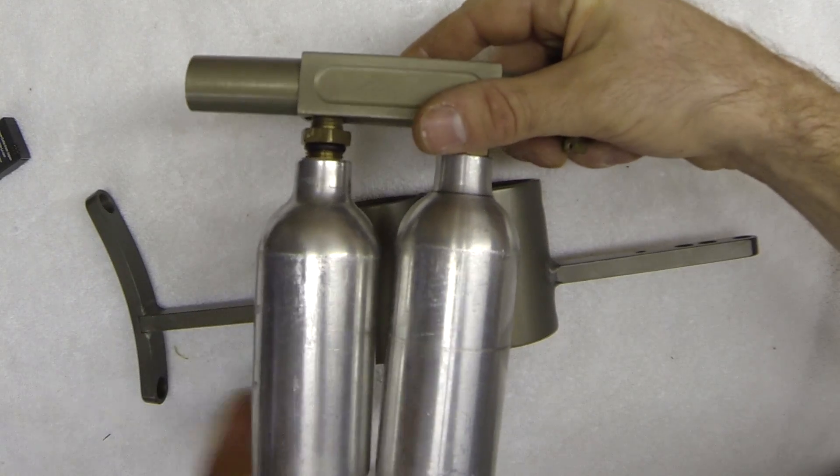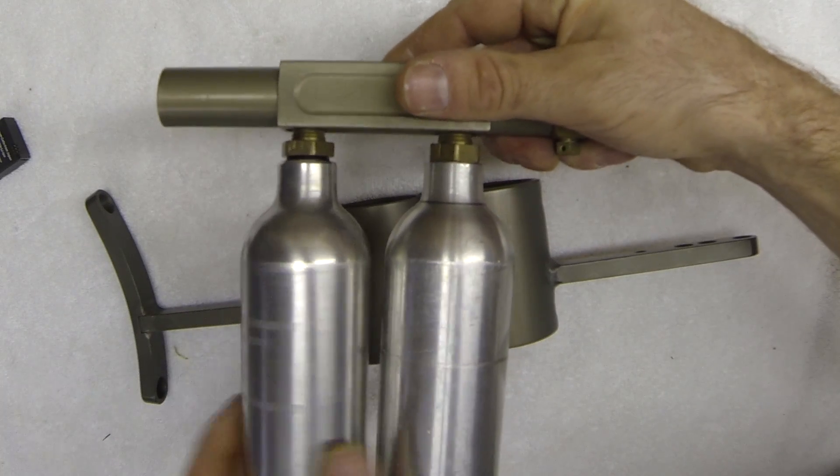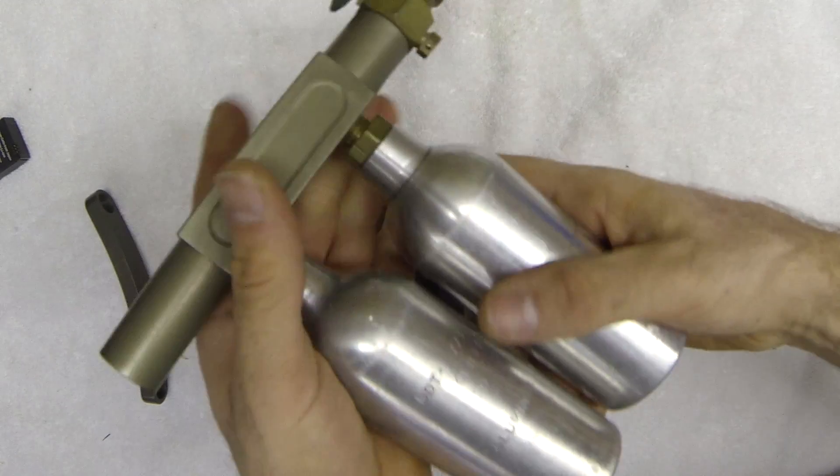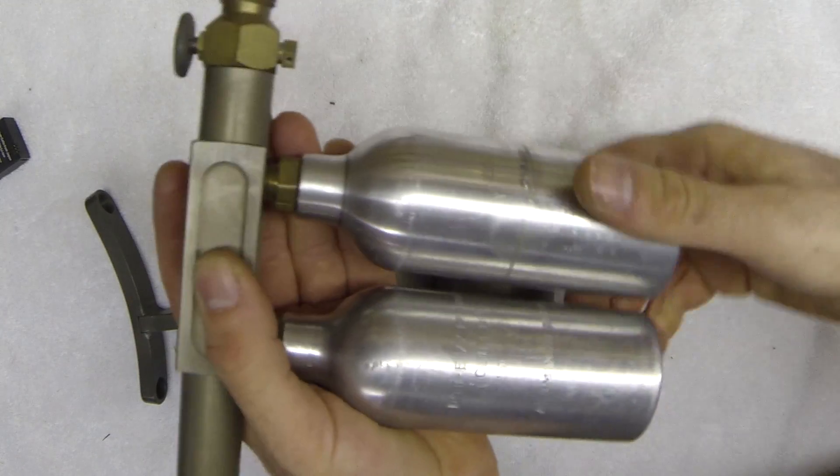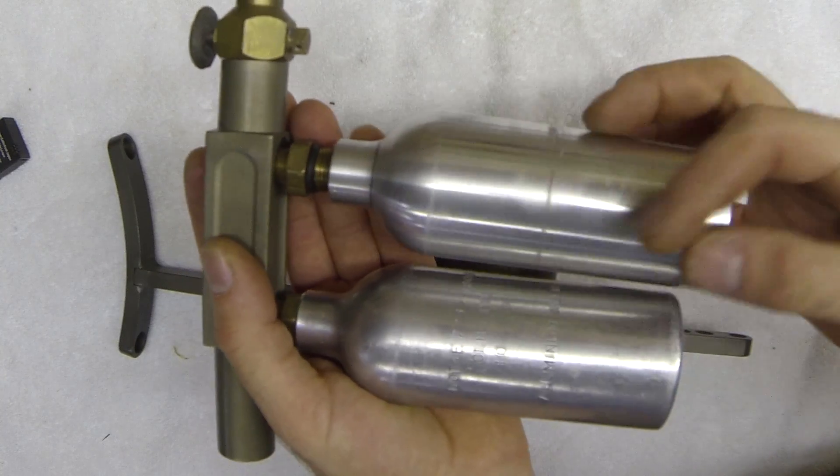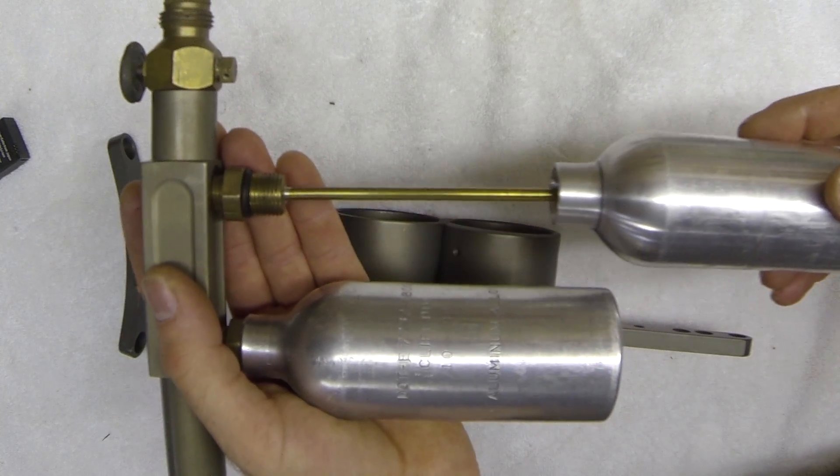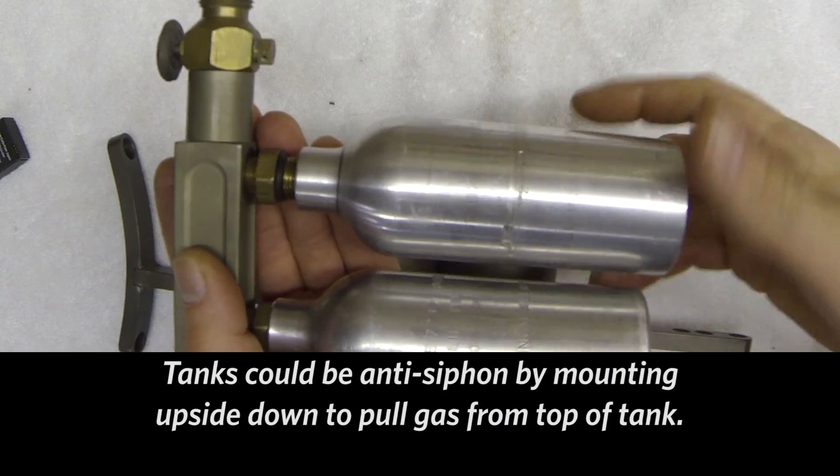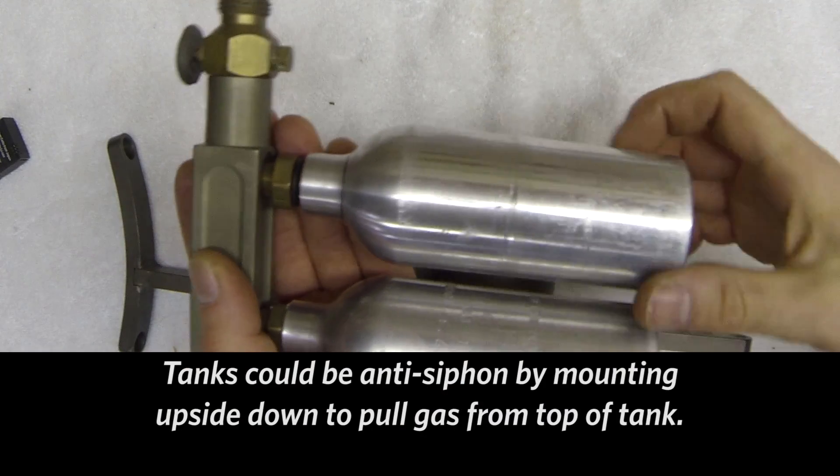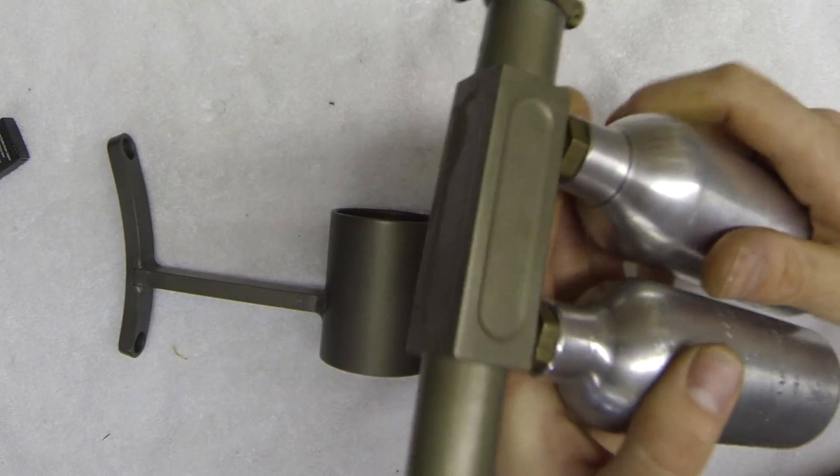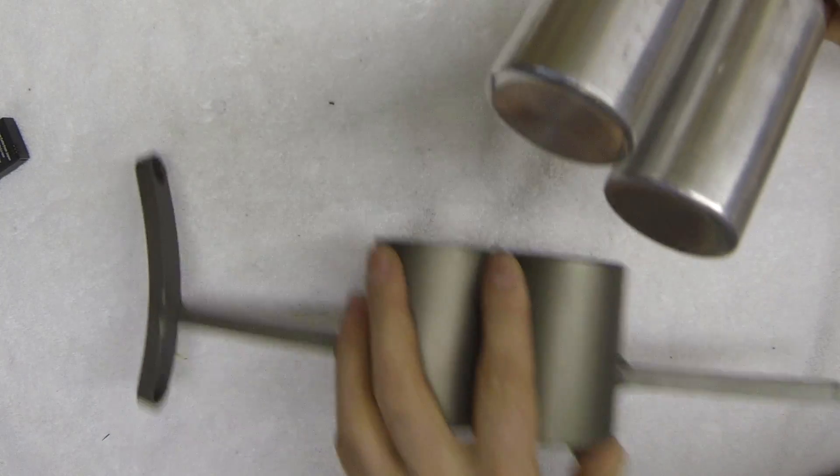Screw back in. I believe both of these tanks have one of those tubes in them. So they both have that siphon tube on them. It's not anti-siphon because it does pull liquid, so it's siphoning the liquid. It is anodized ghost color.